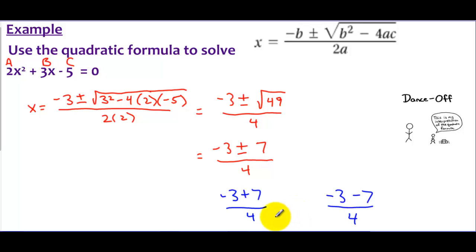If I simplify this first one, negative 3 plus 7, well that's 4; 4 divided by 4 is 1. And out of the second one, negative 3 minus 7, well that's negative 10 over 4, which I can simplify down to negative 5 halves, or negative 2.5. So these are my answers: x equals 1, x equals negative 5 over 2.